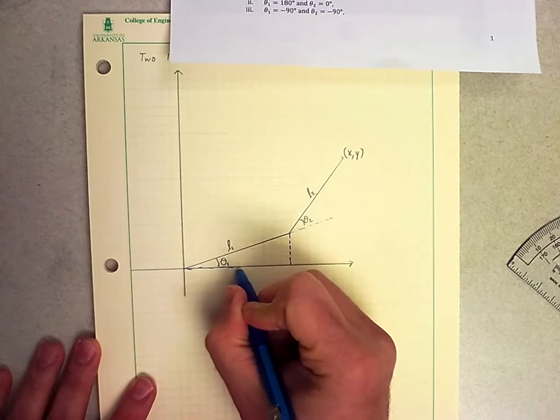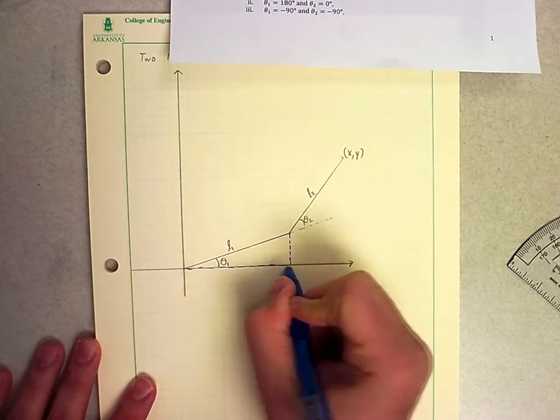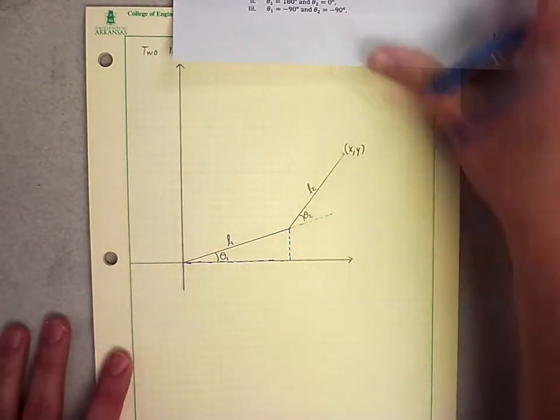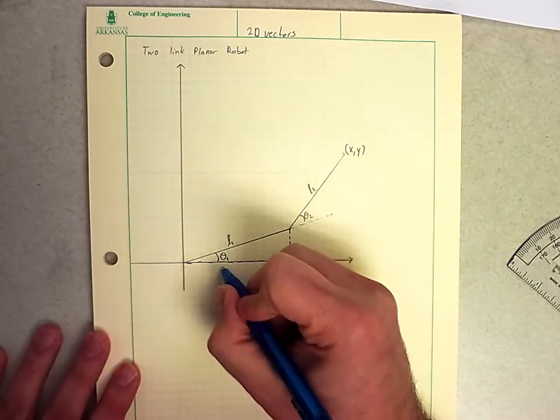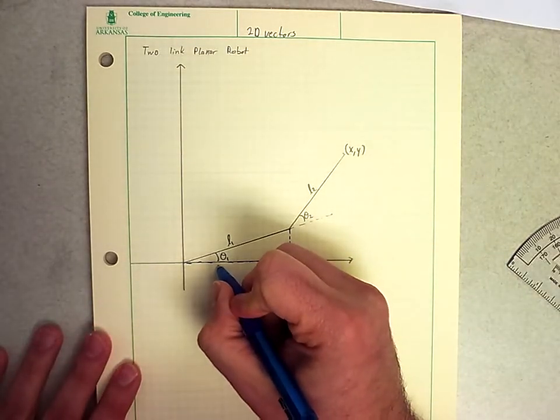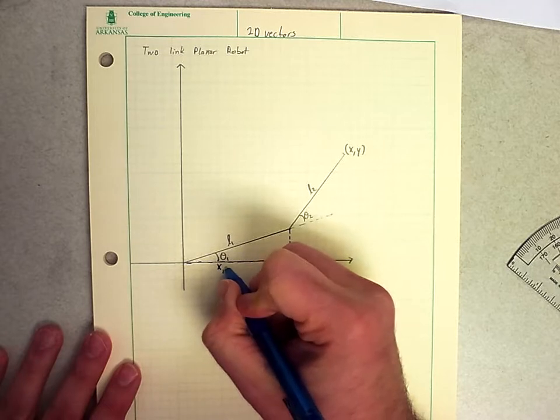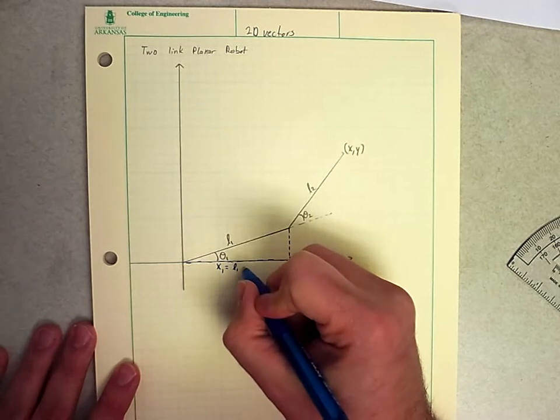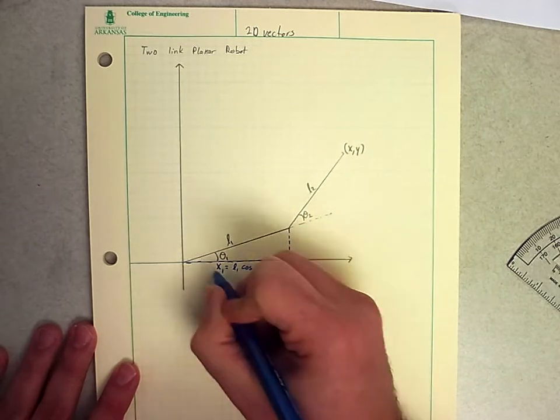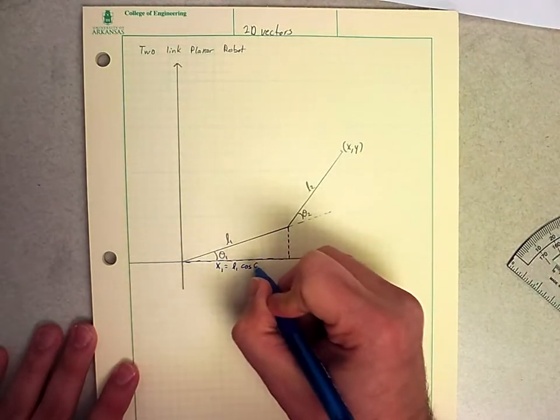we know from dealing with the one-link planar robot that the length of this side, I'm going to call it x1, is equal to the hypotenuse, L1, times the cosine of this angle, which is theta1.